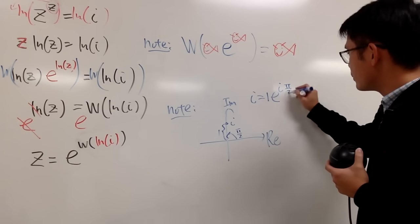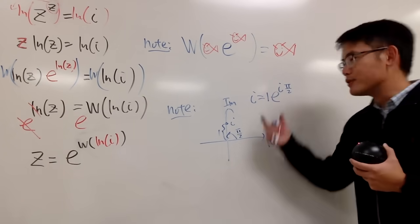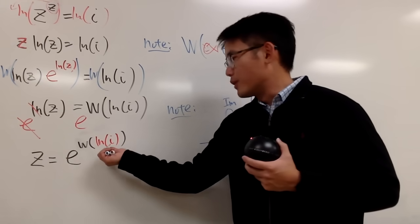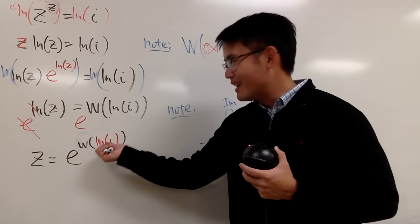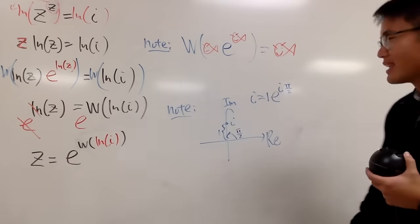So I'll put π over 2, like that. And now I will just put this right here for this i, and you will see ln and then e cancel each other out. So that's pretty much it.